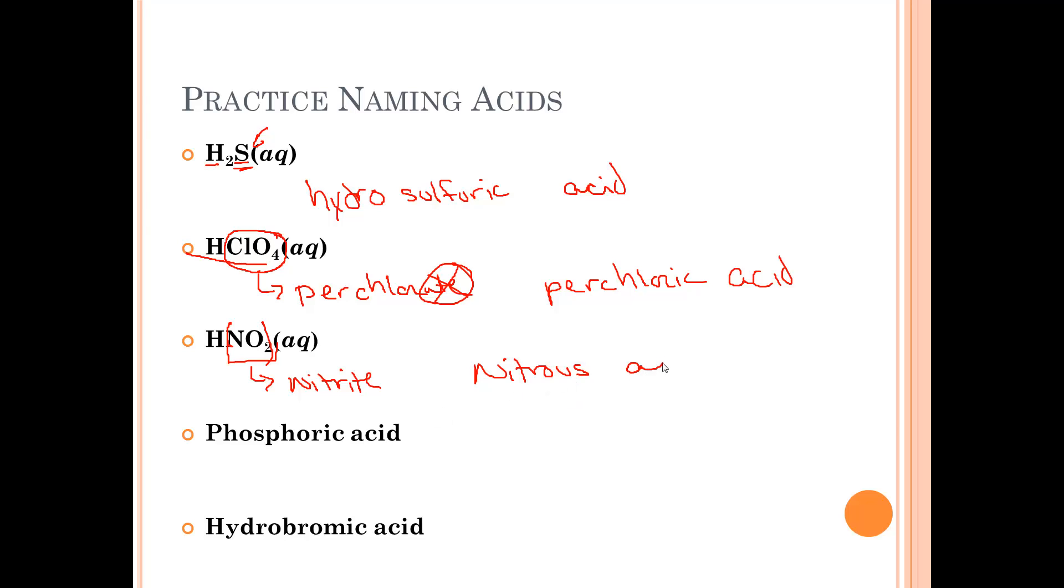Phosphoric acid. Now you might get thrown off by this because we have the base root here. However, we do not have the word hydro in front. So we know that this is a polyatomic ion because there is no word hydro. Therefore, we know that it's PO4 because it came from the -ic. It comes from -ate. So phosphate. Because we have a negative three charge, that means we need three hydrogens to balance out that charge.